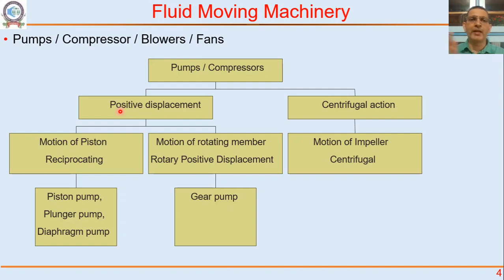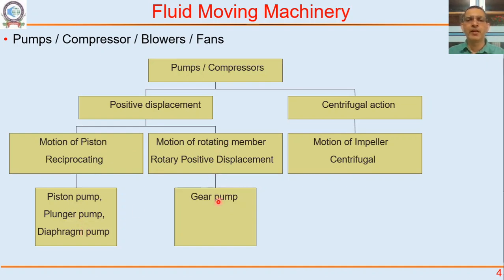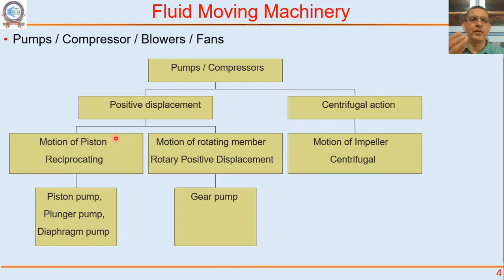They are called as pumps or compressors. We will see the classification — why do we call something a pump and why do we call something a compressor. There are two categories. One is called positive displacement. Under that there is motion of a piston — called reciprocating — or another kind called rotary positive displacement. Motion of piston types are called piston pump, plunger pump, or diaphragm pump. Rotating member types are called gear pumps. Centrifugal action types are called centrifugal pumps or centrifugal compressors.